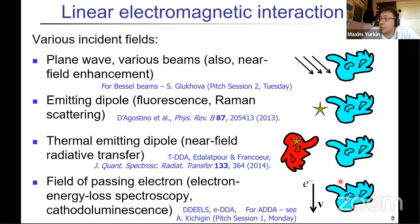Then further, even not fields, et cetera, but produced by electrons. So if you have a field of a passing electron, you can compute electron energy loss spectroscopy, cathodoluminescence. And again, there are specialized codes for that, which are DDEELS and e-DDA. But for implementation in ADDA, there was a talk on Monday by Alexander Kichiji. So importantly, that all this is, I mean, we go from one physical phenomena to another, but it's all boils down to changing the right-hand side in the equation that you solve for the DDA. So that's really easy. I mean, it does not really change the computational core of the method.